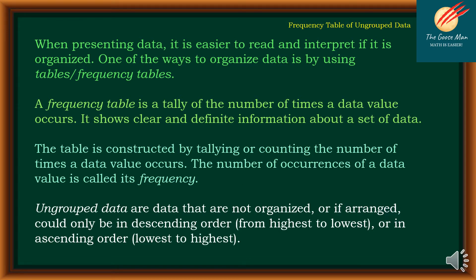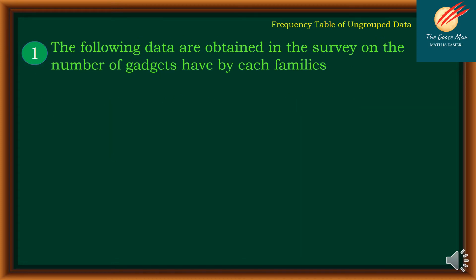Ungrouped data is data that is not organized, or if arranged, could only be in descending order — from highest to lowest — or in ascending order — from lowest to highest. Let's have our example number one.